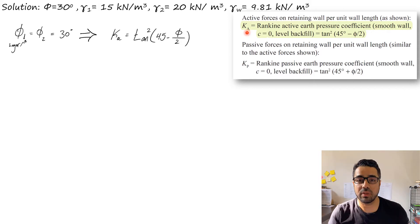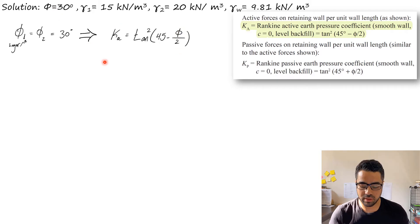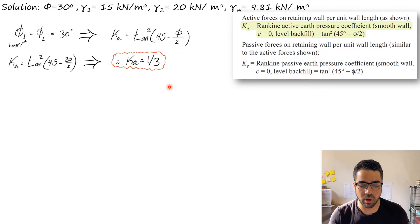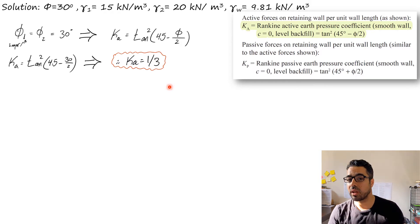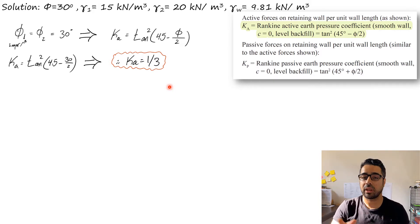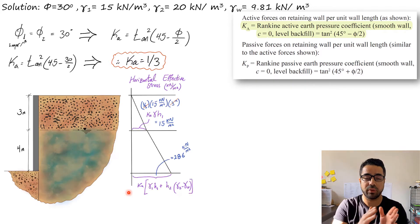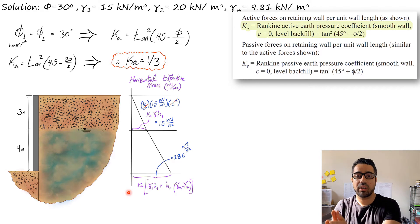We are looking for the stress applied on the surface of the wall — the active stress. We go to the equation: Ka = tan²(45 − φ/2). φ is given as 30°, so that gives us Ka = 1/3. The benefit of Ka — or any k coefficient, whether K-naught or Ka — is that it converts vertical stresses to horizontal stresses.